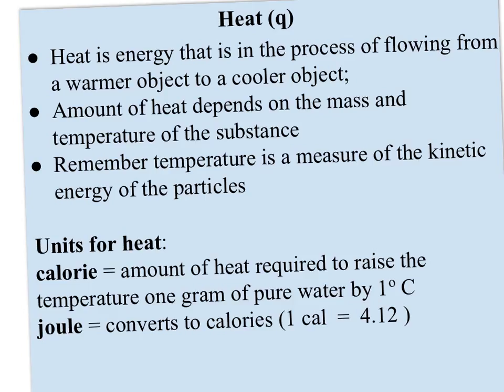Heat flows from warmer to cooler because the warmer object has faster moving particles and the cooler object has slower moving particles, so the faster moving particles tend to speed up the slower moving particles. The amount of heat a substance has depends on the mass and the starting temperature of that substance. Temperature is a measure of the kinetic energy of the particles, and mass is a measure of the number of particles. So heat increases when you increase either the temperature or the mass.